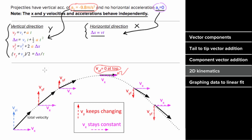Keep in mind: during this entire trip, the vertical acceleration is the same — negative 9.8 — on the way up, at the top, and on the way down. The vertical acceleration never changes. So what would an example problem involving 2D kinematics look like?